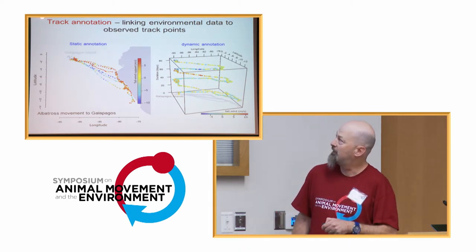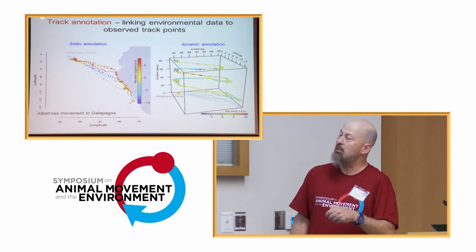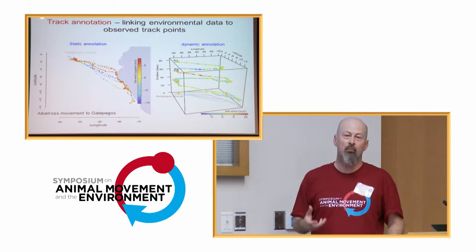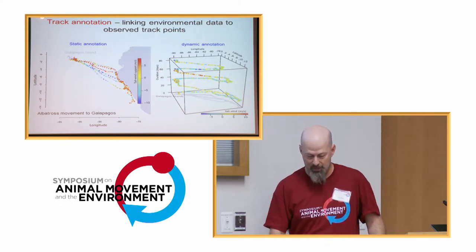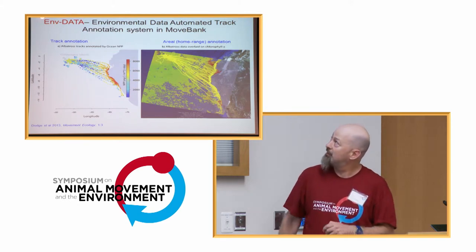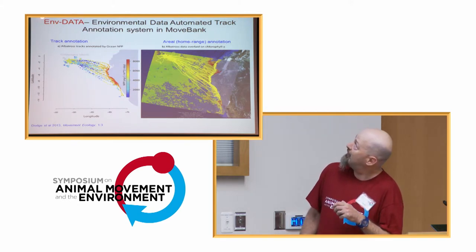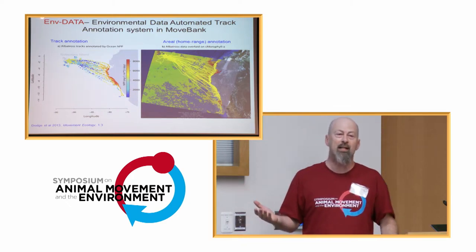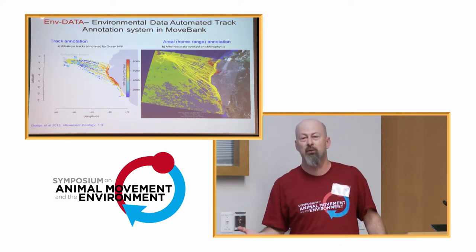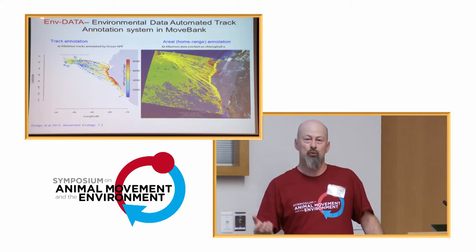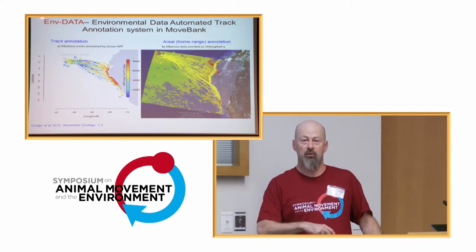We have automated annotation tools in MoveBank. Annotation can be static - a 2D classification of what kind of place it is - or dynamic, reflecting what was happening at that moment, what the animal was experiencing. ENV-DATA is the acronym for Environmental Data Automated Track Annotation System. It's part of MoveBank - if you put your data in MoveBank, ENV-DATA is available to you.